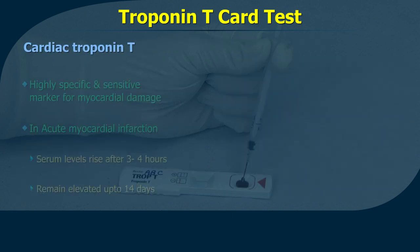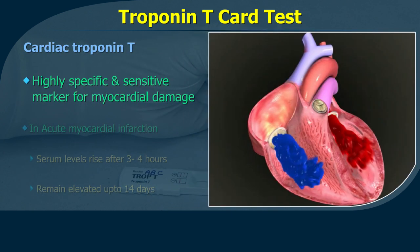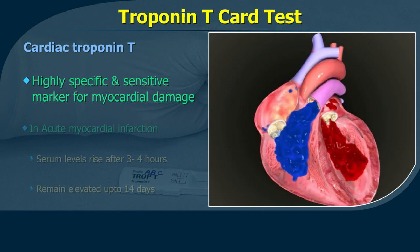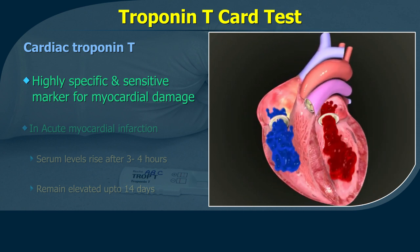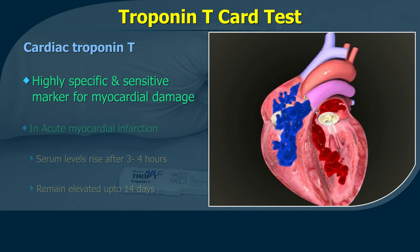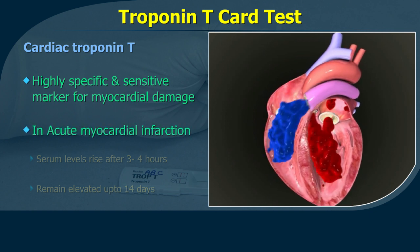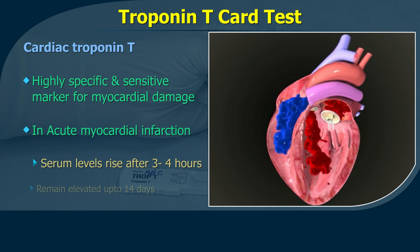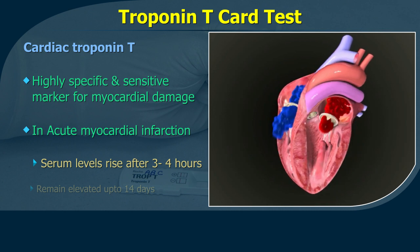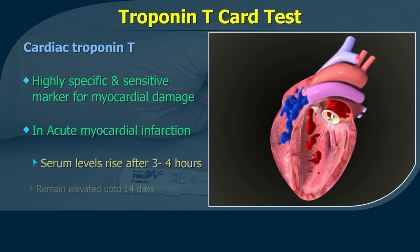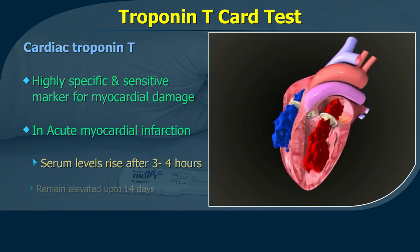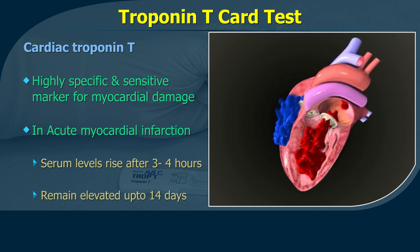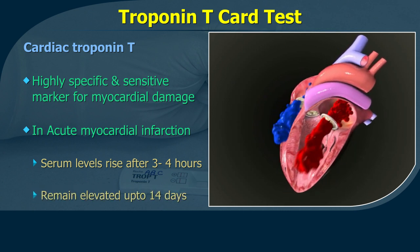Cardiac troponin T is highly specific to the myocardium and a sensitive marker for myocardial damage. In cases of acute myocardial infarction, troponin T levels in serum rise about 3–4 hours after the occurrence of cardiac symptoms and can remain elevated for up to 14 days.